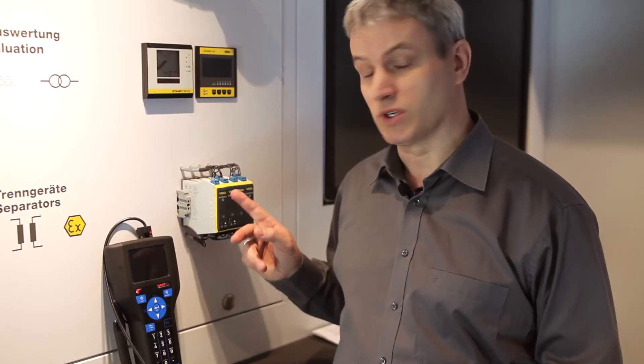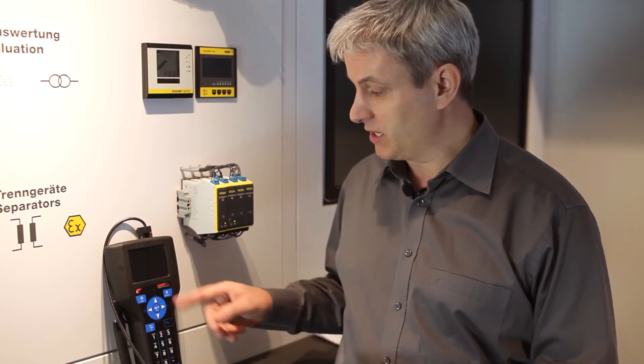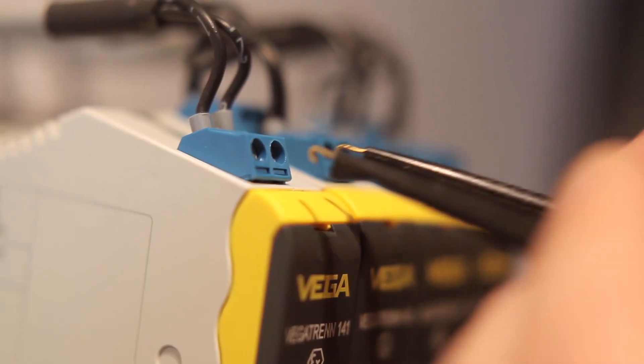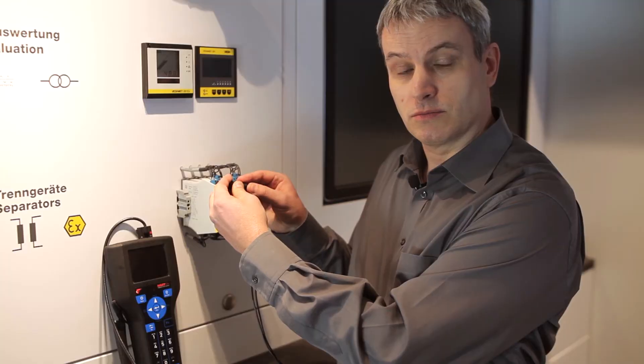For example, how do you connect a HART handheld device to a separator? The device has to be connected parallel to the sensor, perhaps with a HART resistor.